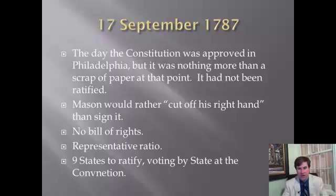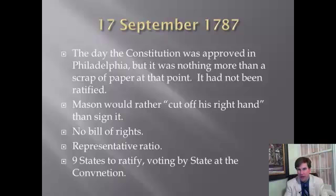September 17, 1787 was the day the Constitution was approved in Philadelphia, but it was nothing more than a scrap of paper — it had not been ratified. George Mason said he'd rather cut off his right hand than sign it because there was no Bill of Rights. Elbridge Gerry and Randolph himself actually didn't sign the Constitution — Randolph later became a firm proponent of it, but Mason didn't sign it. This thing had some problems and people recognized it. Benjamin Franklin thought it wasn't perfect, but it was the best they could come up with to make sure everyone was going to be happy. We know what you get when you try to make everyone happy — no one's happy. The Constitution is, in so many ways, just a series of blundering compromises.